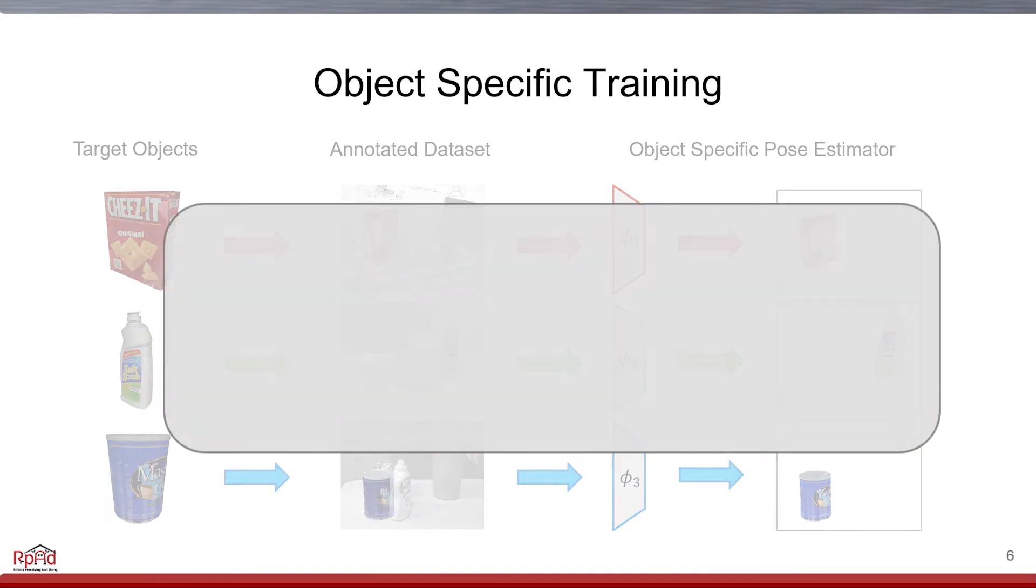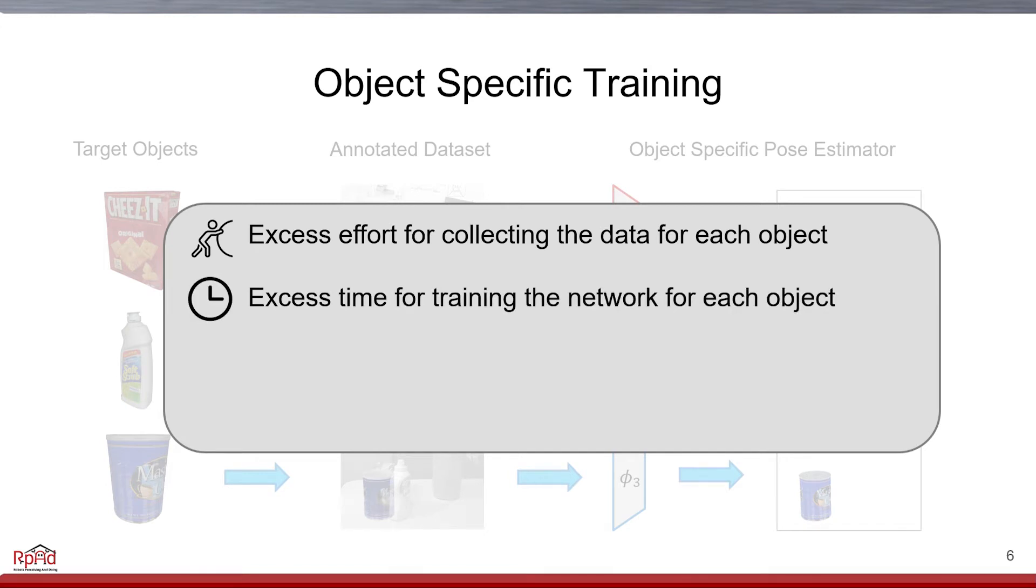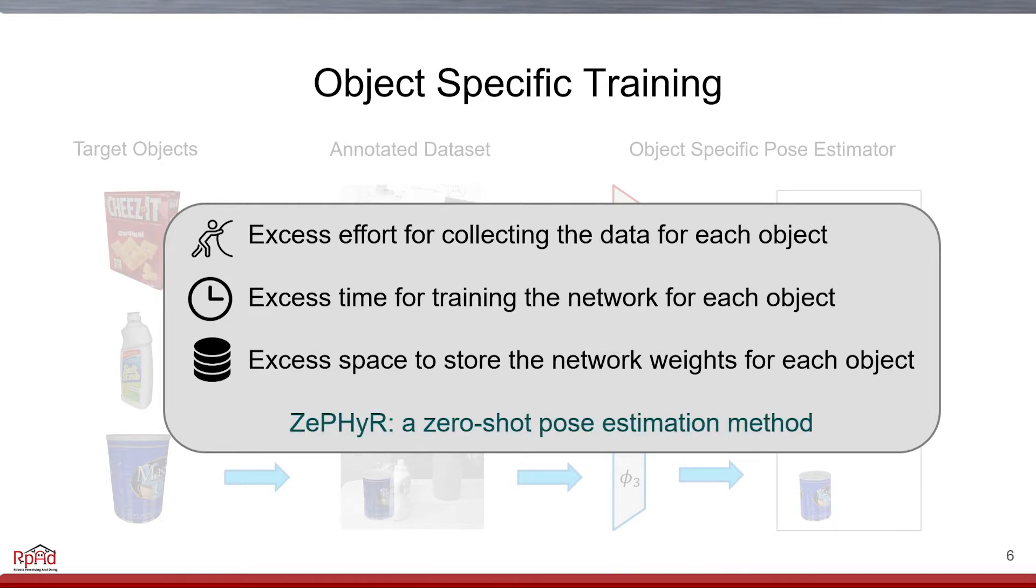This results in excess effort in collecting data for each object, excess time in training new networks, and excess space to store the network weights. To solve this problem, we propose Zephyr, a zero-shot pose estimation method.